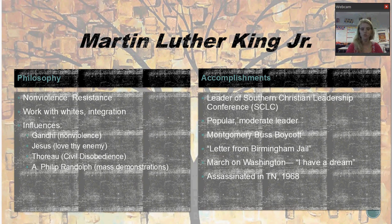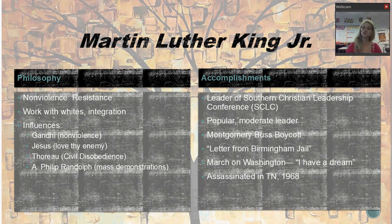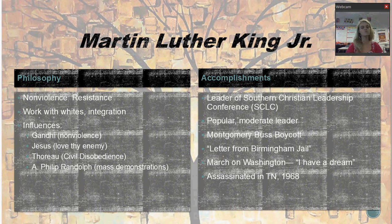From Henry David Thoreau, he gets the idea of civil disobedience — if you believe that a law is unfair or unconstitutional, you choose not to follow that law without making a scene. Thoreau was protesting the Mexican-American War and chose not to pay his taxes to say he wouldn't support that war. So one of the things Dr. King talks about is: protest peacefully, and if they arrest you, go to jail, and when they let you out, do it all over again.